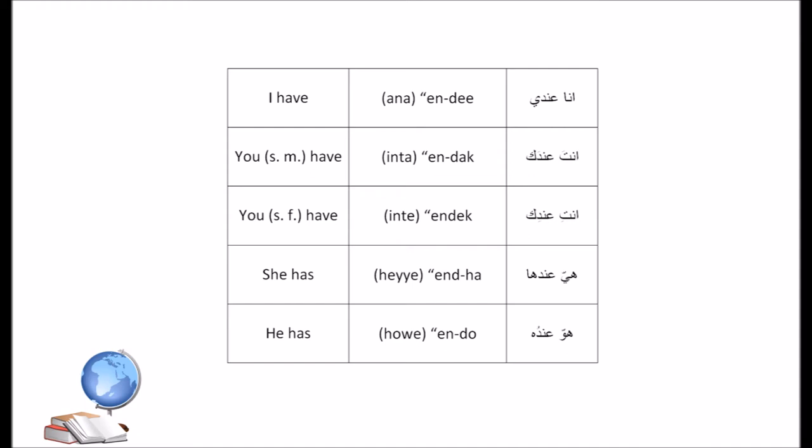Using subject pronouns with verbs is actually optional, and most of the time they are not used with 'to have' and are only added for emphasis. So we only say عندي, عندك, عندك, and so on.